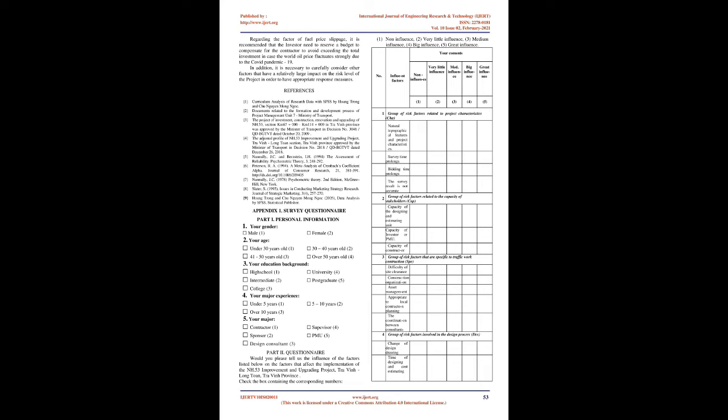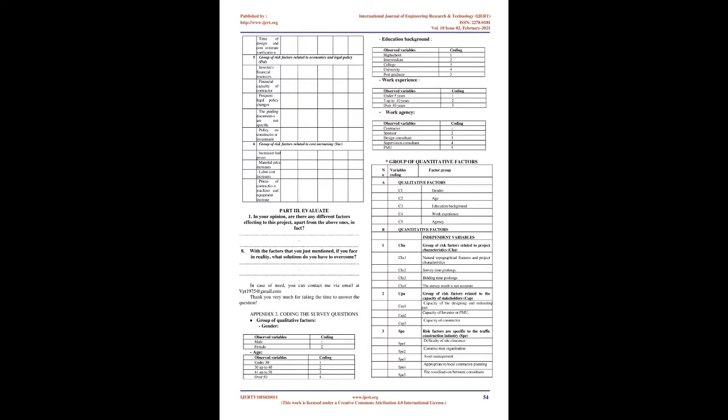Average values of observed variables from INC1 to INC4 in the group of risk factors related to price slippage are in the range from 3.84 to 4.47 on the 5-point Likert scale. Thus, most of the survey responses agreed that price slippage significantly affects the implementation of the Renovation and Improvement NH.53, Tra Vinh A Long Tone Section, Tra Vinh Province Project.